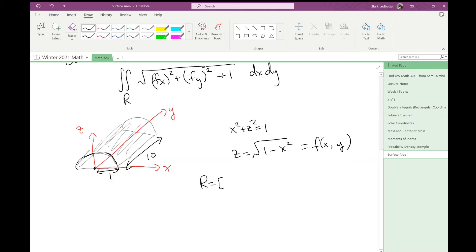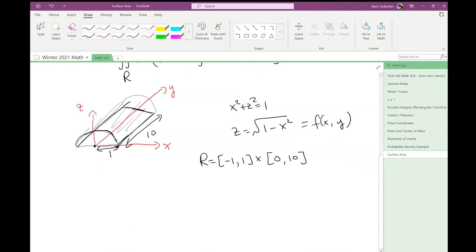And then what's the region? Well, now we're looking at this rectangle, basically, on the bottom, right? x is going from negative 1 to 1, and y is going from 0 to 10.